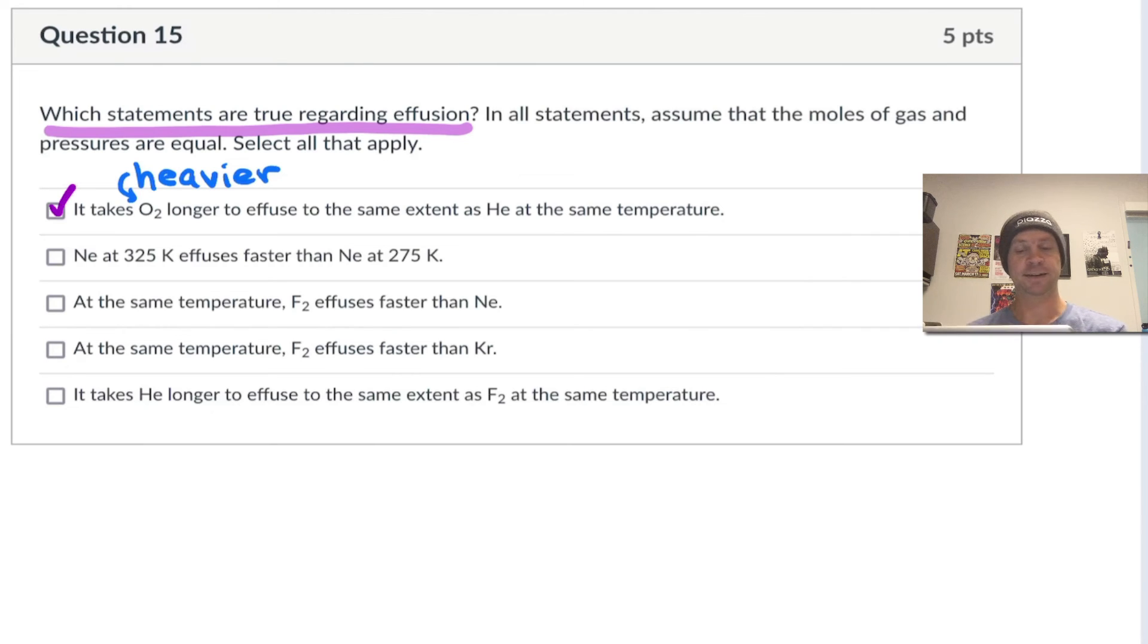Second statement, neon at 325 Kelvin effuses faster than neon at 275 Kelvin. Well, this, again, is absolutely true because neon at 325 Kelvin has a greater root mean square speed. Gas particles are moving faster and will thus effuse more rapidly.